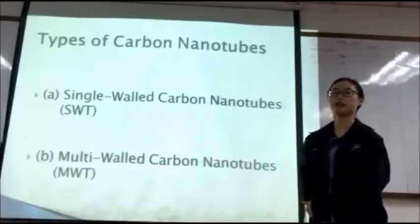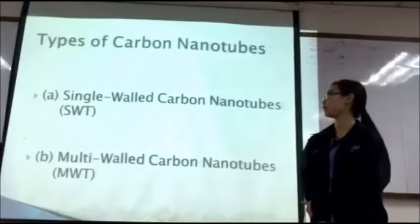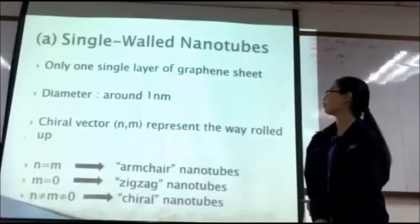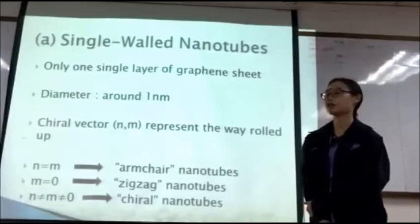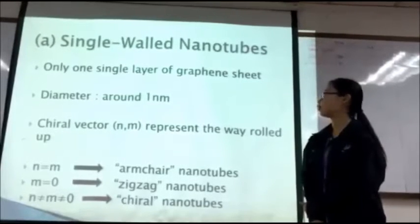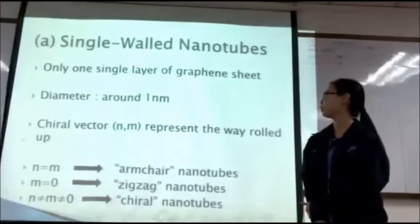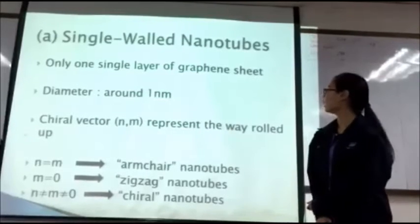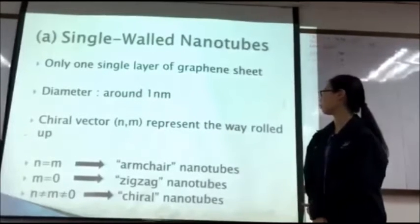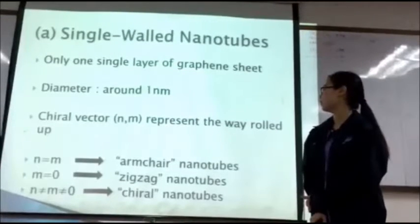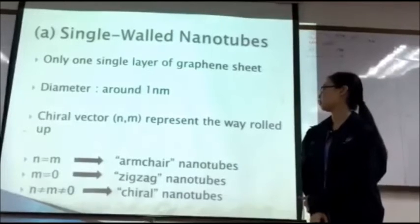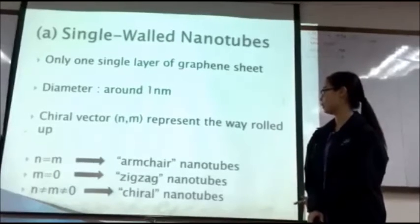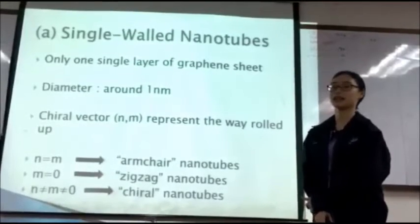There are two types of carbon nanotubes: single wall nanotubes and multi wall nanotubes. Single wall nanotubes have only one single layer of graphene sheet rolled up into a tube shape. The chiral vector represents the way it rolls up. When n equals m, it is called armchair nanotubes. When m equals 0, it is called zigzag nanotubes. When m is not equal to 0, it is called chiral nanotubes.